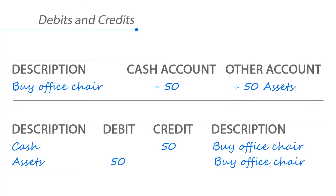Repeating the earlier example of buying an office chair for $50: cash is reduced by $50 to pay for the chair, and assets are increased by $50 because the business now owns a chair valued at $50. Another way to show this transaction is to use the accounting terms debits and credits, as shown in the table below.